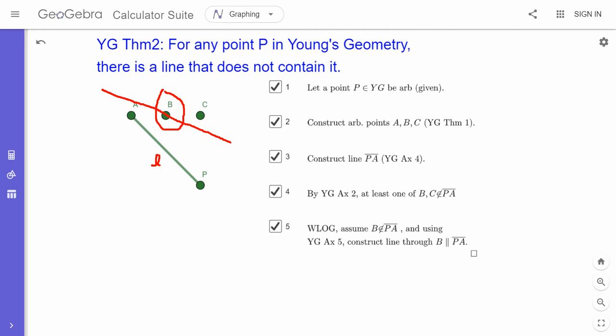So therefore, right, what do I have? I started with P, and I found this line that doesn't contain P, right?